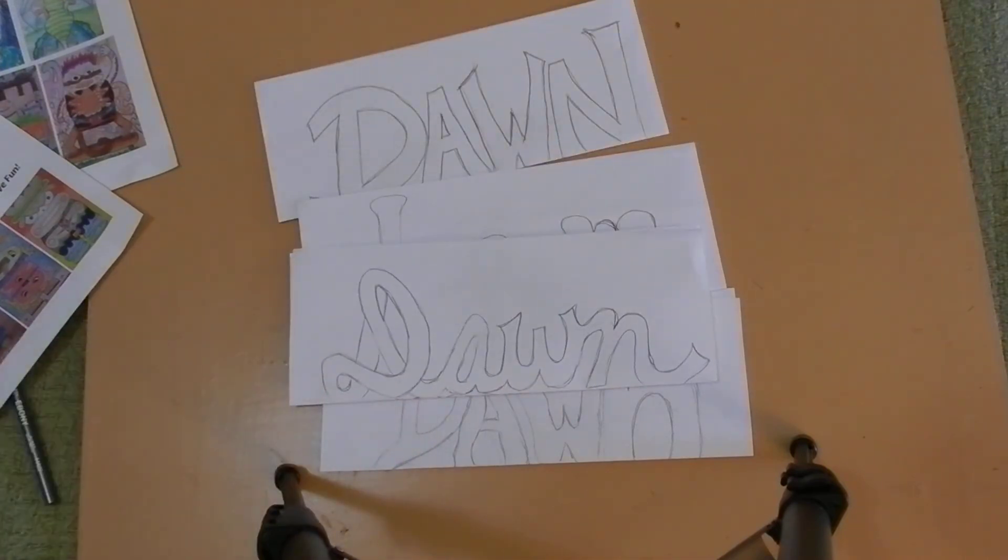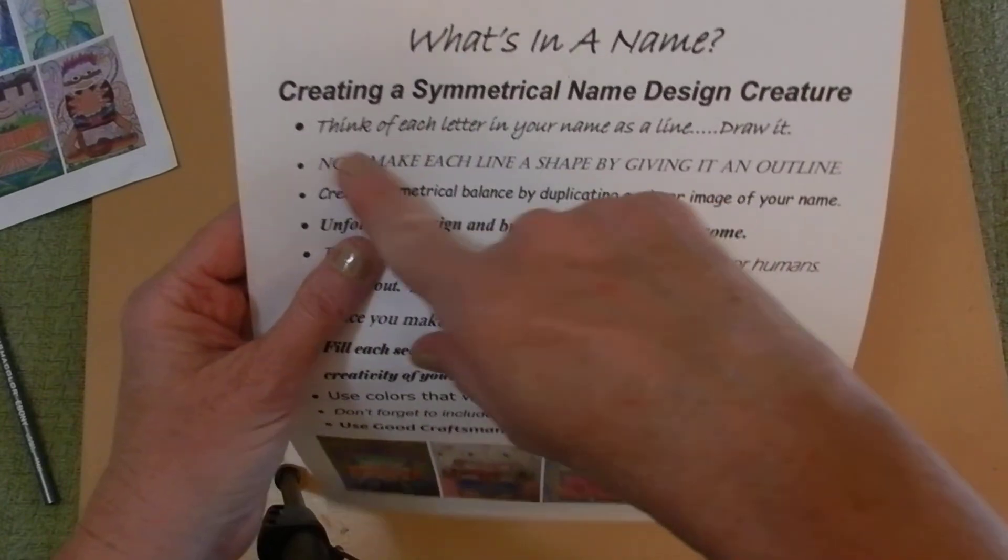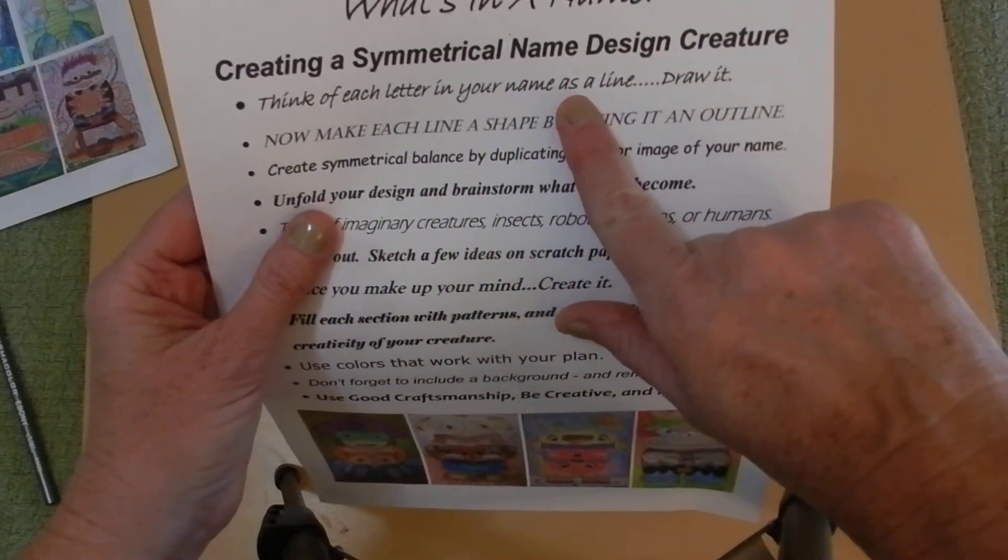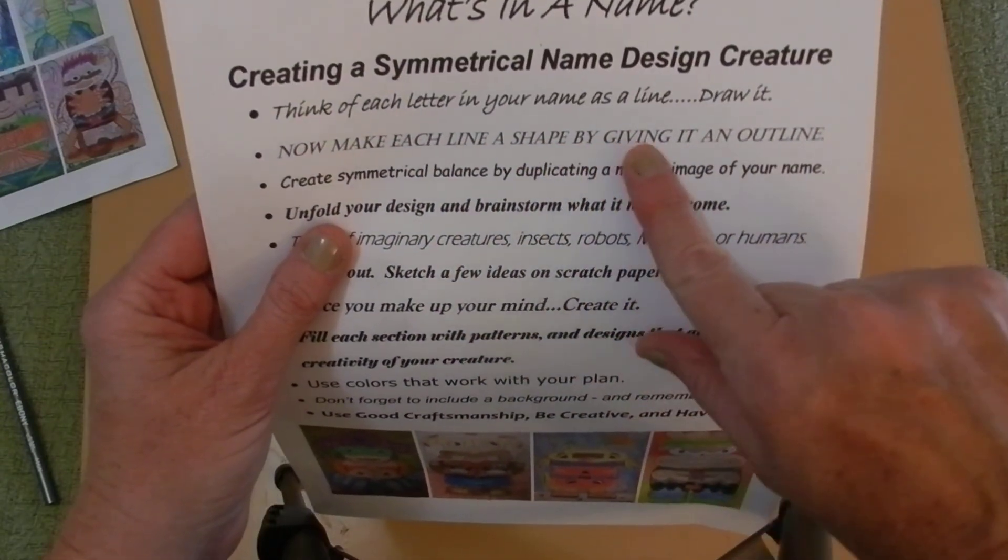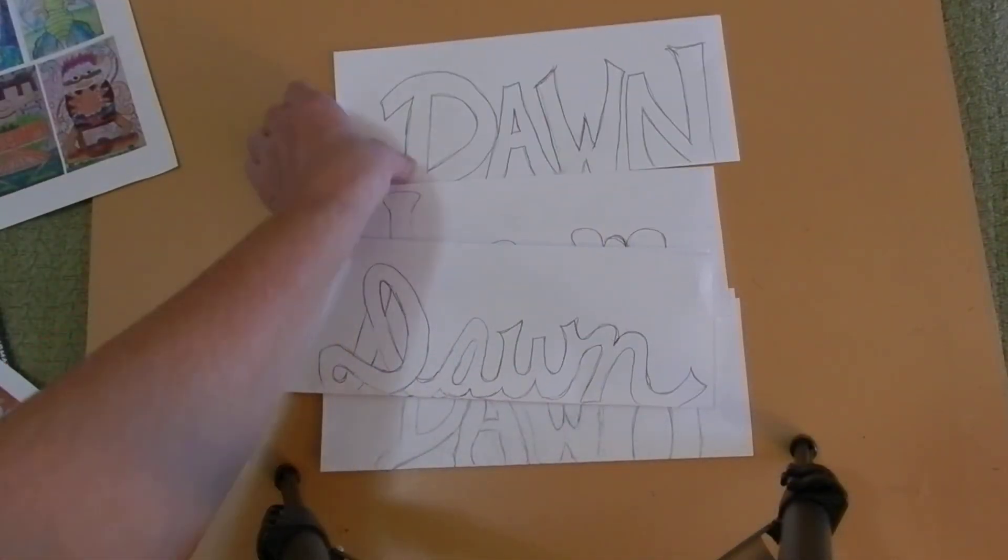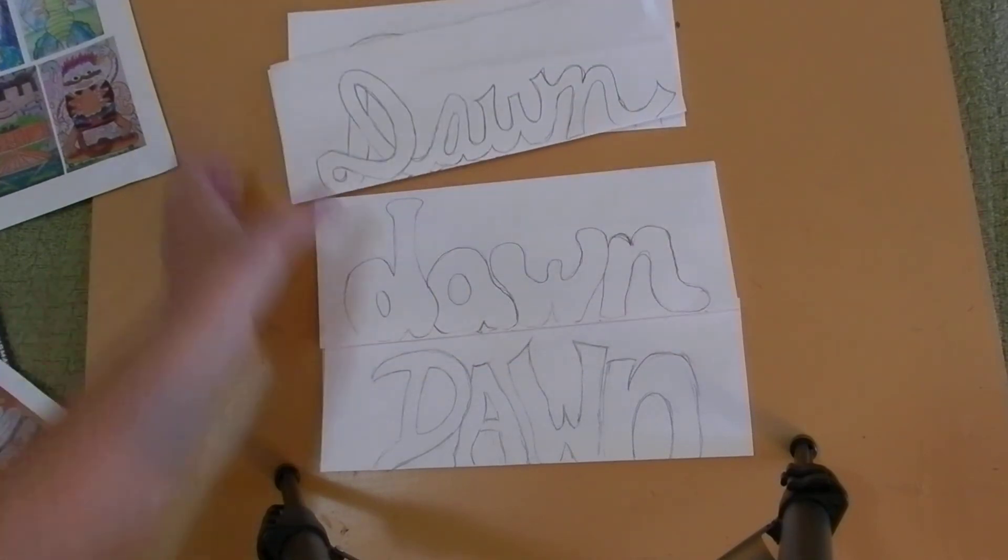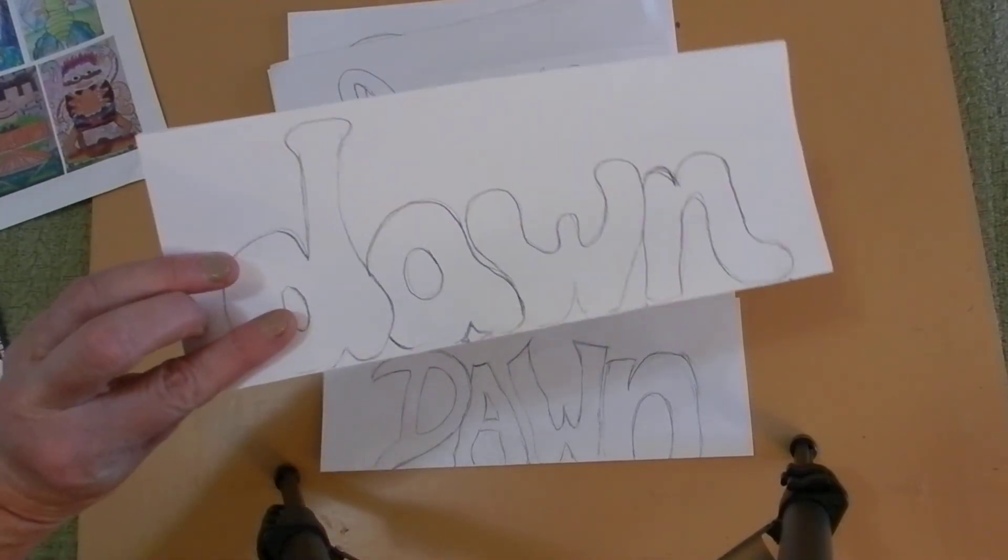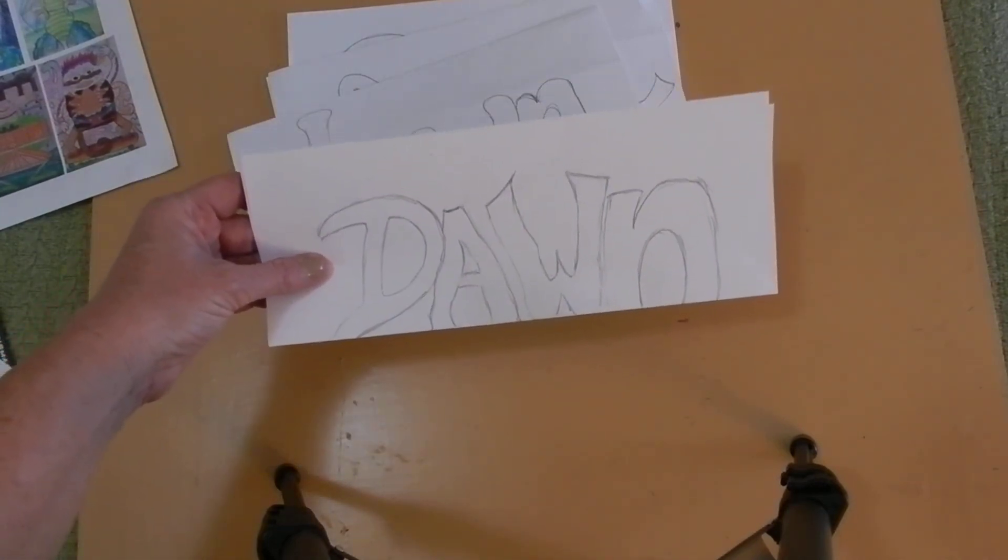And I even did it in cursive. So again, I have taken my name and I thought of each letter in my name as a line and I've drawn it. And then I've made each line a shape by giving it an outline. Now for mine, I've given four different examples so that I can kind of pick and choose. I would like for each of you to have at least two or three. I think that would be terrific.